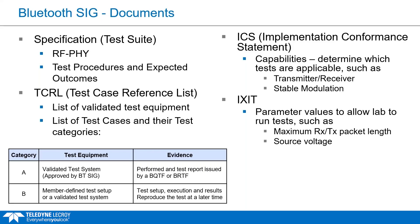The ICS document declares a device under test, or DUT's, capabilities and is used to select which tests are applicable to a product. It includes things like whether the device has a transmitter and/or receiver and if it supports stable modulation. Finally, the ICSIT defines parameters that allow testing to be completed on a product, such as maximum supported packet length and source voltage. Previous iterations also included normal operating conditions and temperature and humidity ranges, but those are no longer tested for RFI.